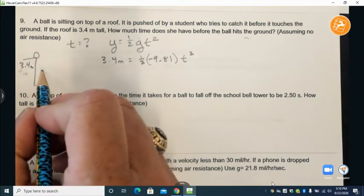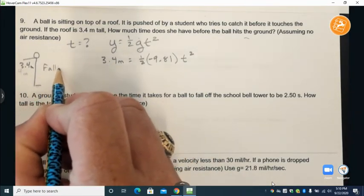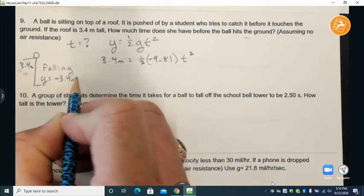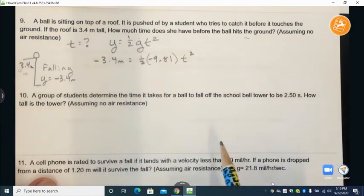That's because remember if we're falling our y is negative 3.4 meters. So that becomes a negative 3.4.